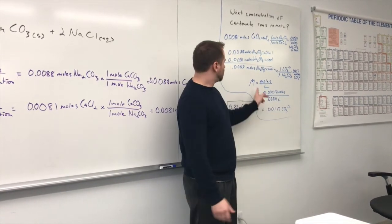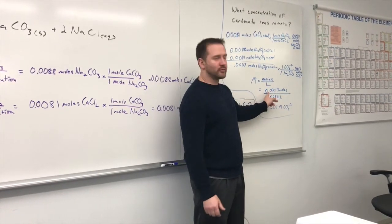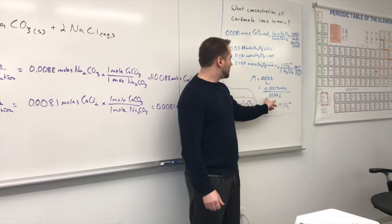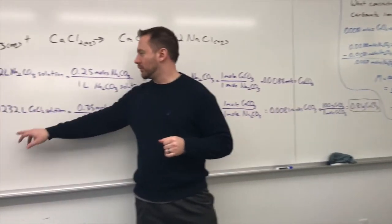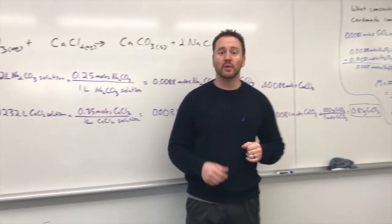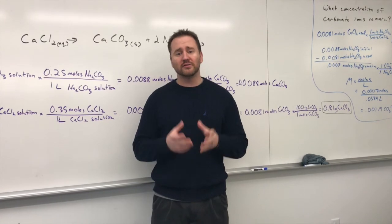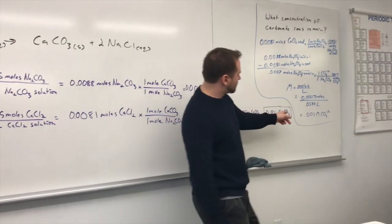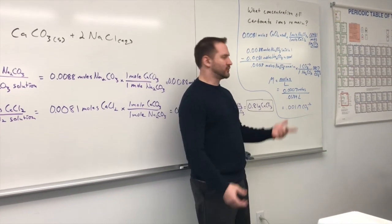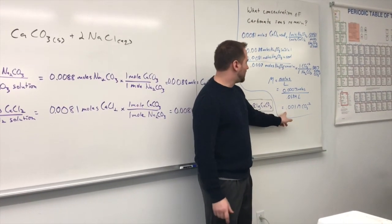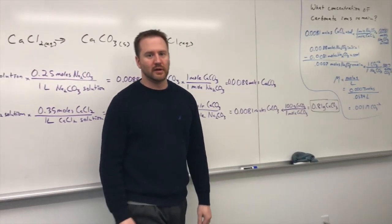Now, to calculate the concentration of it, you have to realize that molarity is moles per liter. So you plug in the number of moles that we had. Now, to find the volume, we mixed two solutions. One was 35.2 mils and one was 23.2 mils. When we add up those volumes together, you get 58.4 milliliters. So that's your total volume of solution. Converting that to liters, that's 0.0584 liters. So the concentration, since we only have one sig fig, for the carbonate ions remaining would be 0.001 moles per liter for the carbonate ion.